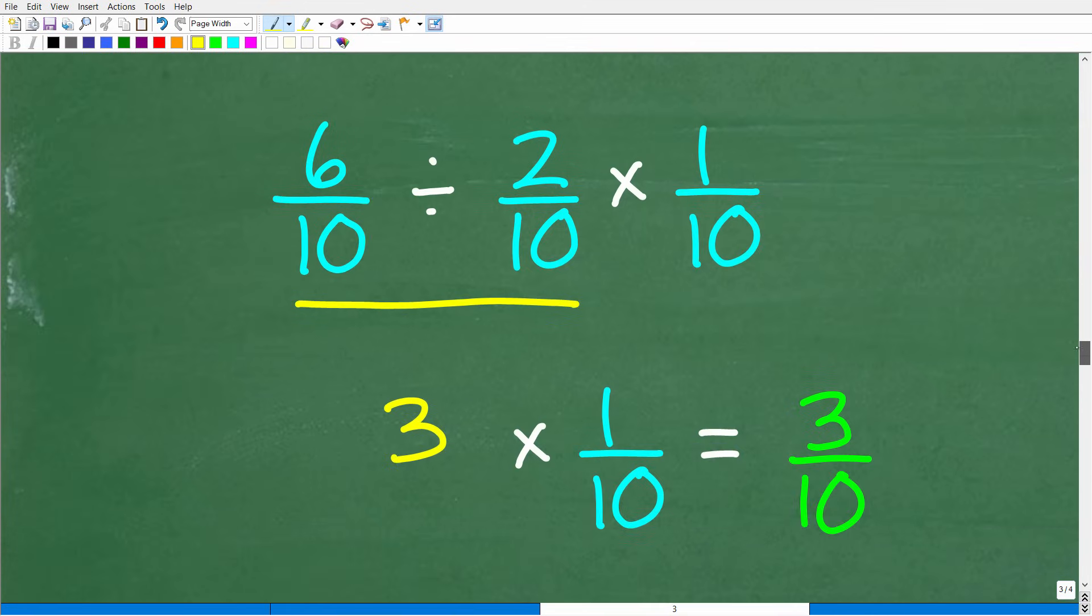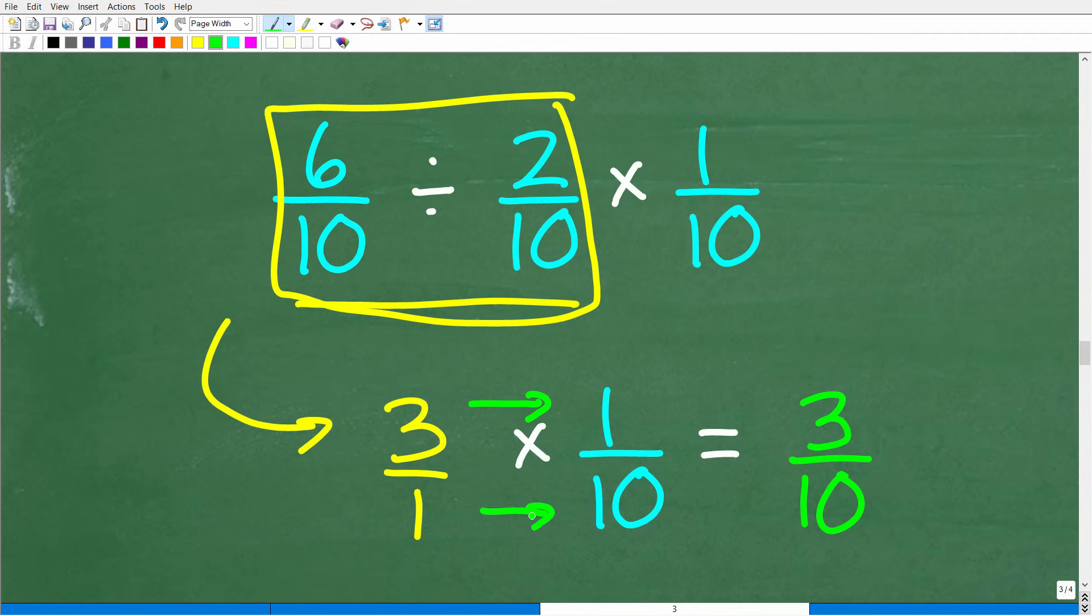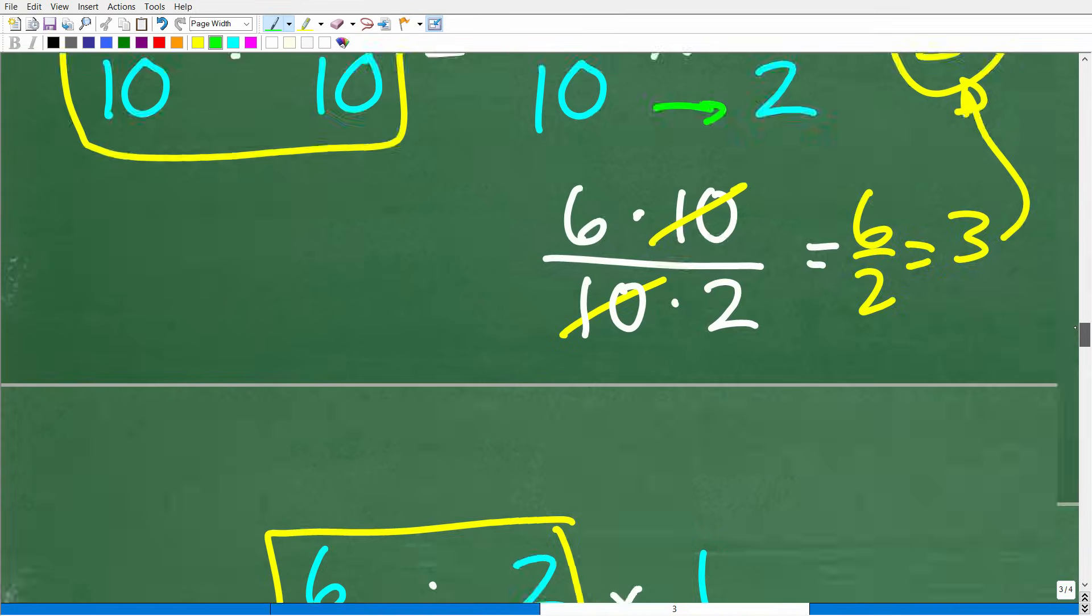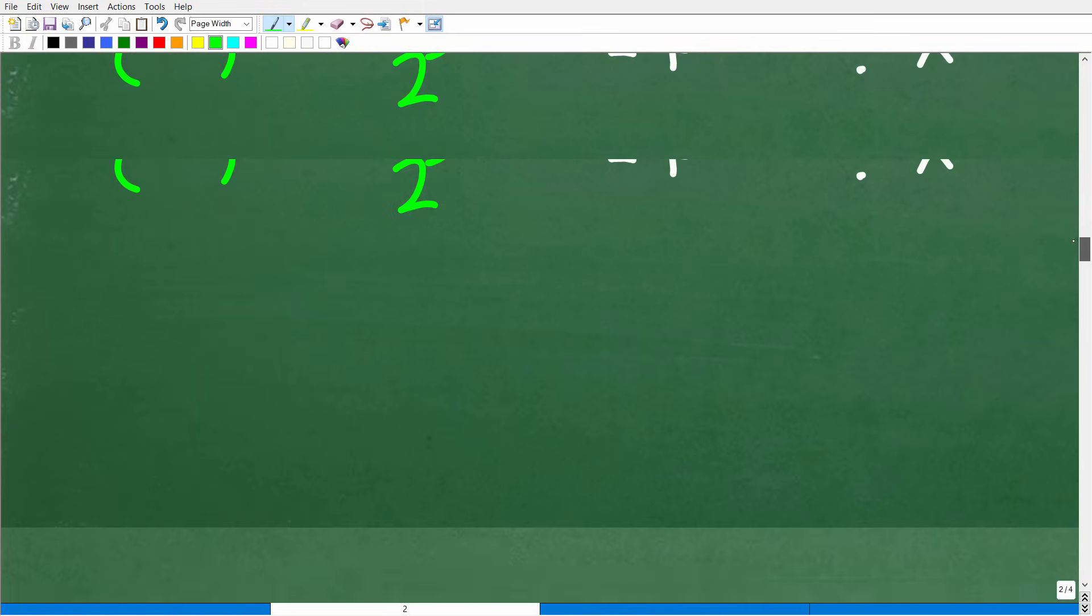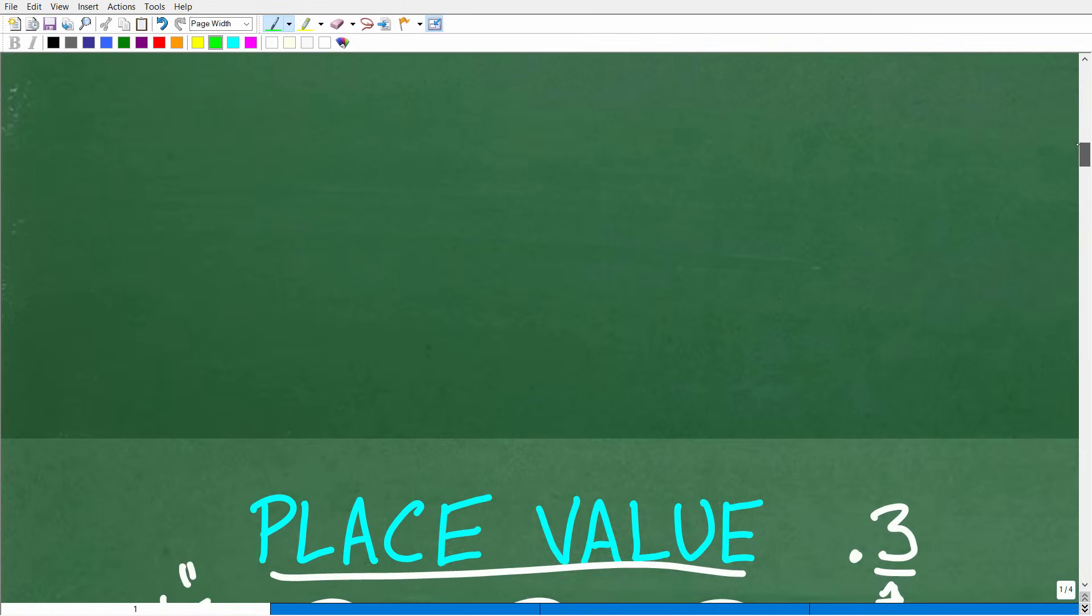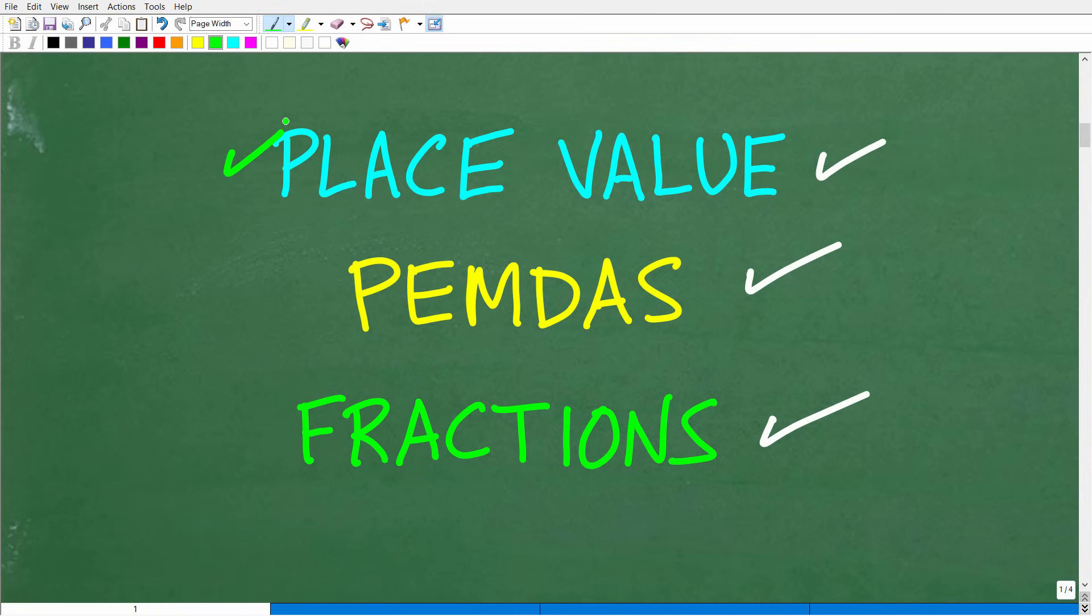We're almost done. 6/10 divided by 2/10 equals 3. Now we take that 3 and multiply it by 1/10. So 3 times 1/10—we can put 3 over 1 times 1/10. Multiplying the respective numerators and denominators: 3 times 1 is 3, 1 times 10 is 10. We cannot simplify this fraction—it's fully reduced. The answer is 3/10. I took my time to review the main ideas of this problem. Let's go back and look: we talked about place value, order of operations PEMDAS, and fractions.